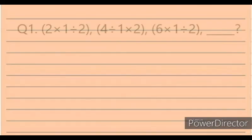Question 1. The sequence is: 2 times 1 divided by 2; 4 divided by 1 times 2; 6 times 1 divided by 2; blank.